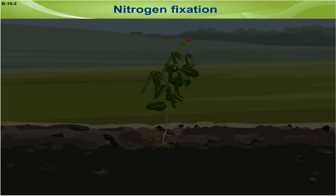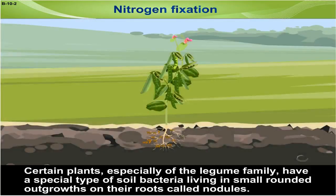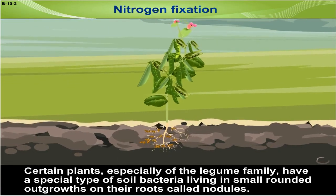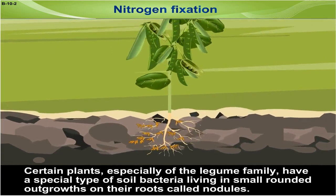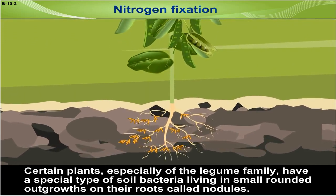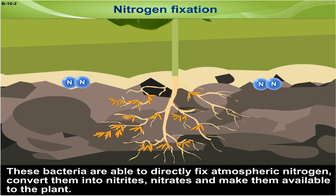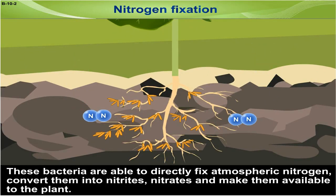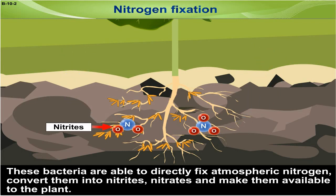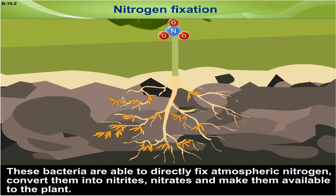Nitrogen fixation. Certain plants, especially of the legume family, have a special type of soil bacteria living in small rounded outgrowths on their roots called nodules. These bacteria are able to directly fix atmospheric nitrogen, convert them into nitrites and nitrates, and make them available to the plant.